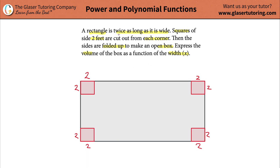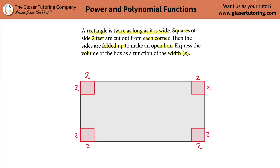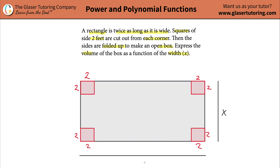Now, rectangle. It says it's twice as long as it is wide, meaning whatever the length of this side is will be twice whatever this distance is. They want us to call the width x. This is the length of the box and that part is the width. The whole side before you cut anything out was x — that's the width. The entire length of the box is twice that width, so that has to be 2x. These 2s here are just because they told us they're cutting out squares of 2 feet from each side.